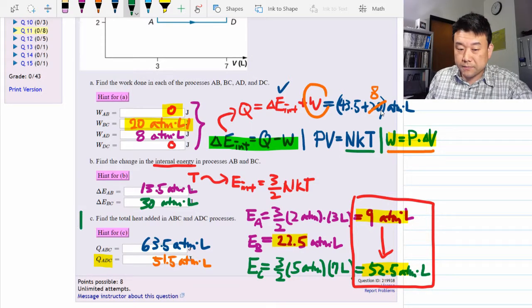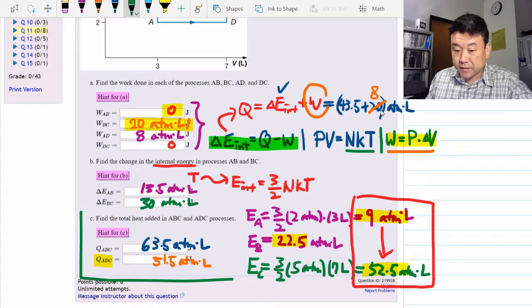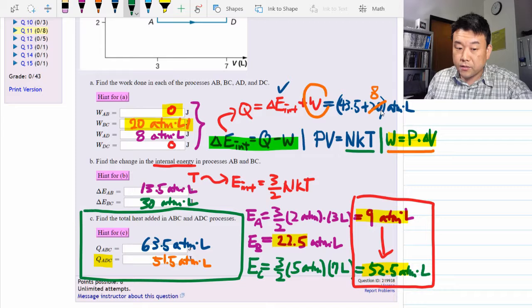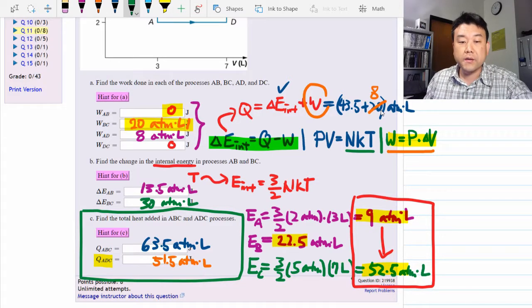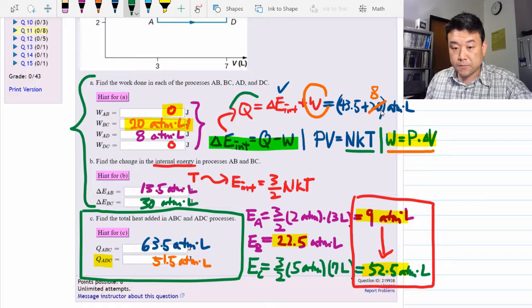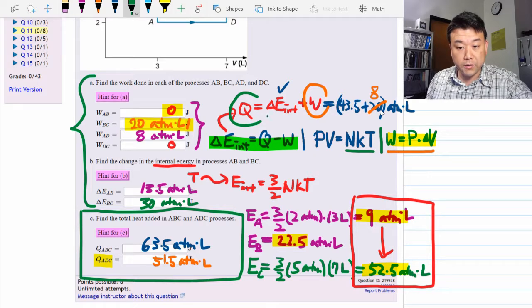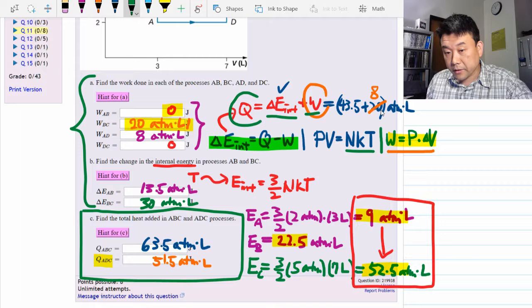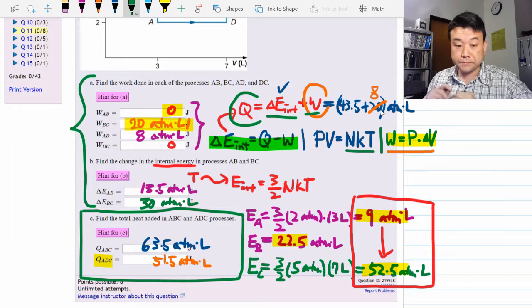Now what could have made this question difficult is imagine you are simply asked this part C, which is a thing someone could do. Then you have to remember that you have to go through these steps in A and B in order to find the heat. Because the way you find the heat is by using the first law of thermodynamics. And to use it, you need to figure out the change in internal energy and you need to figure out the work done.